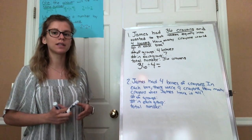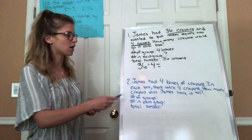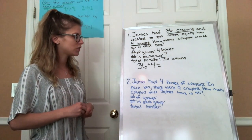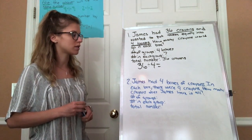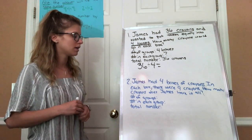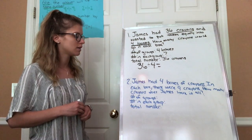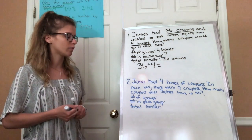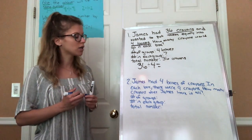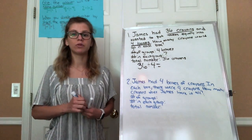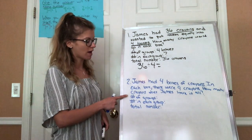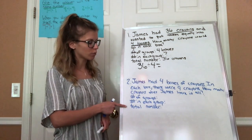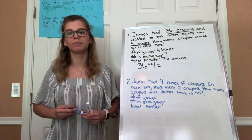Now let's take a look at another word problem. It says James had four boxes of crayons. In each box there were nine crayons. How many crayons does James have in all? Take notes of this problem using that same format of number of groups, number in each group, and total number.